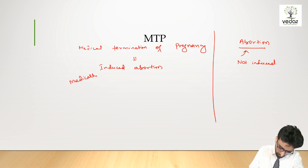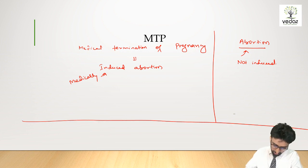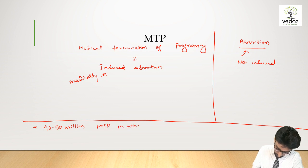Now what NCERT is saying about MTP: per year, 40 to 50 million MTPs are being done in the world, which is approximately one-fifth of the total pregnancies in the world.